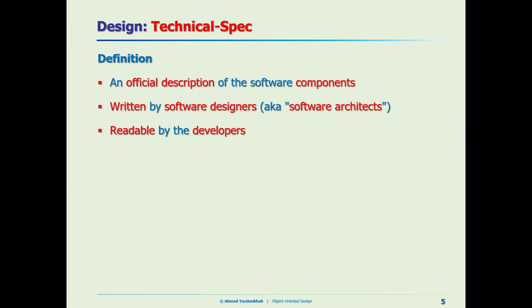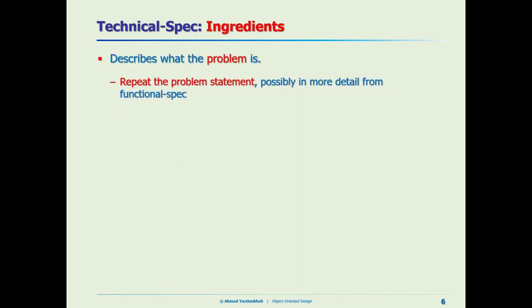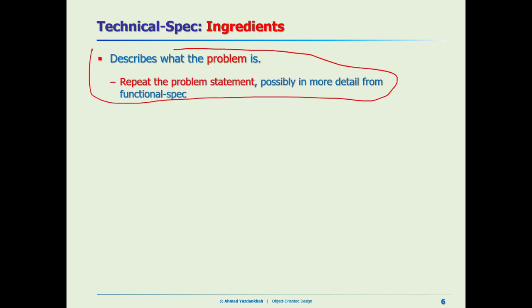Now let's go inside the technical spec and look at it in more detail — what are its ingredients? First of all, we need to describe the problem. We did this for the functional spec as well. We need to tell the audience what problem we're going to solve. It could be the original problem statement or the functional spec version if that one is clearer.